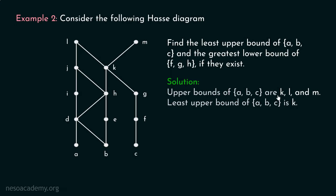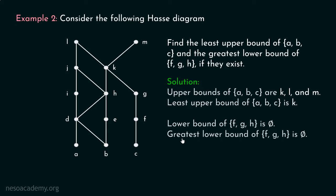Now, what is the greatest lower bound of F, G, H? First we have to find all the lower bounds of F, G, H. We know that the lower bounds of F, G, H is phi. Therefore, greatest lower bound of F, G, H is also phi. There is no lower bound of F, G, H; therefore there is no greatest lower bound of F, G, H. Hence it is clear that greatest lower bound of F, G, H is phi.